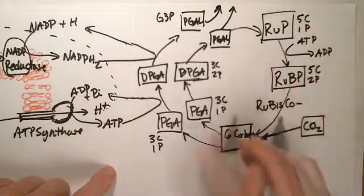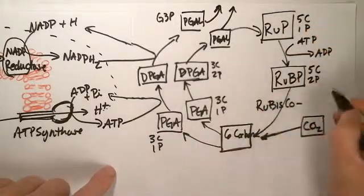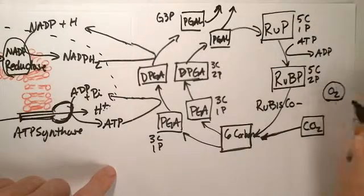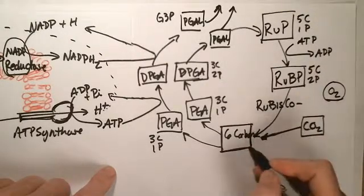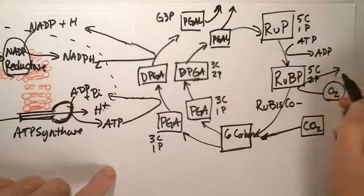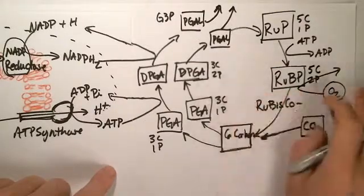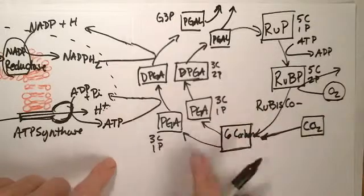Now, there are other places where molecules can jump off, such as oxygen. If oxygen happens to get in here, instead of the carbon dioxide, it'll actually pull the RUBP, and it'll pull it right out of the system. Calvin cycle doesn't occur.